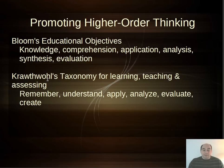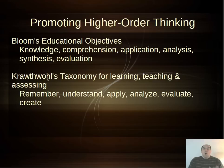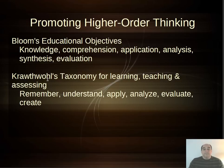Bloom's also includes synthesizing — taking all the information you have and putting it together — and then evaluating information, which requires more critical thinking. Crothwell's taxonomy covers the same type of thing: remembering — can you recall it, can you recognize it — then understanding — can you actually understand it, can you interpret it, break it down into smaller parts, summarize it? Then applying that information: now you know this, what can you do with it, can you execute some type of action? Then analyzing, critiquing what was good or bad, evaluating, and finally creating — can you take this information and create something else with it?